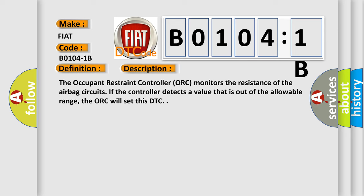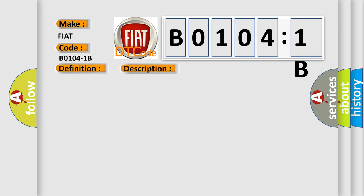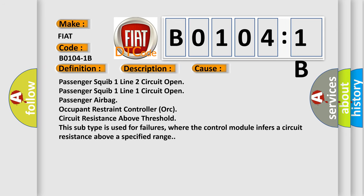This diagnostic error occurs most often in these cases: Passenger squib one line two circuit open, passenger squib one line one circuit open, passenger airbag occupant restraint controller (ORC) circuit resistance above threshold. This subtype is used for failures where the control module infers a circuit resistance above a specified range.